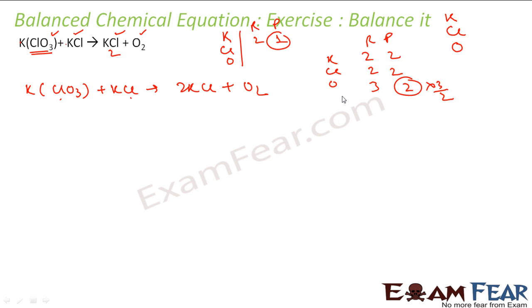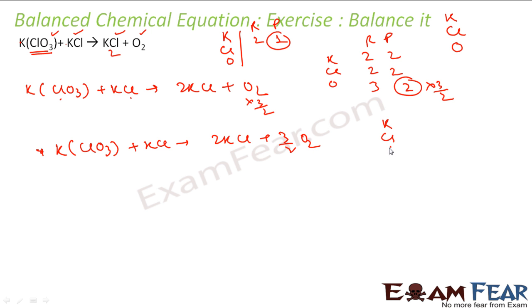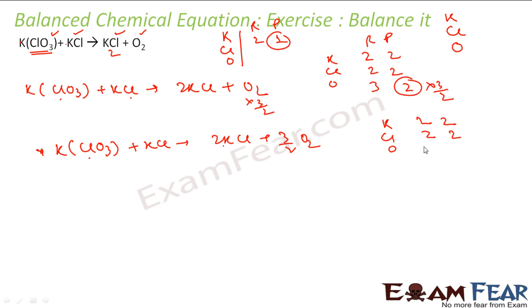This is not balanced. So we will multiply the O2 by 3/2. So what you get is: KClO3 + KCl = 2KCl + 3/2 O2. Let's see if it is balanced now. Potassium is 2 here, product also 2. Chlorine is 1 + 1 = 2 here, product also 2. Oxygen is 3 here, and here also 3/2 × 2 = 3. So it is balanced, but there is a fraction.